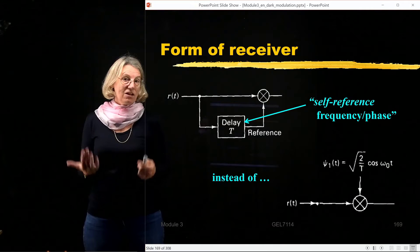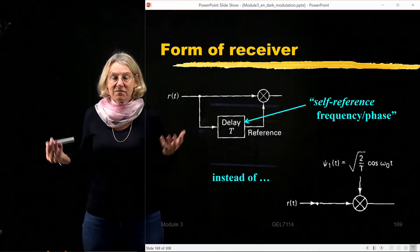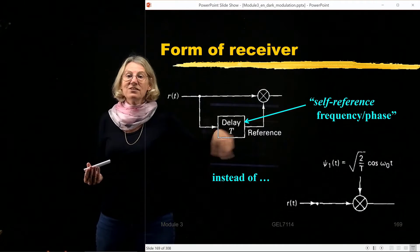I'm going to use what I call a self-reference. So of course the receive signal has got some cosine omega zero term in it, and I'm going to actually use that to do the decoding.